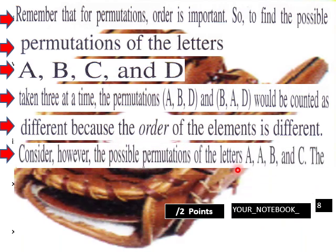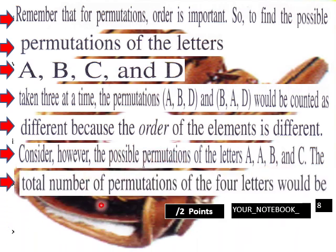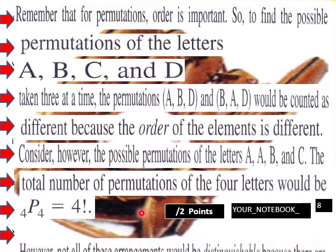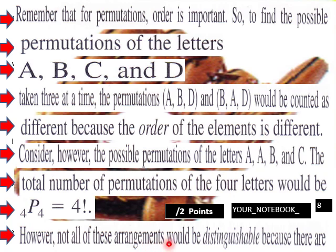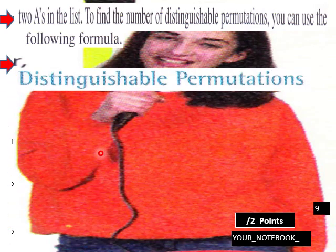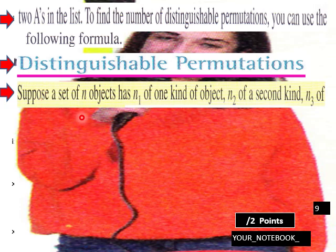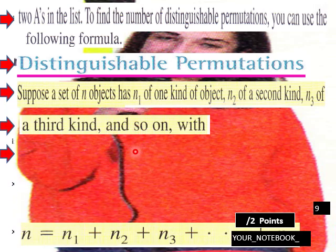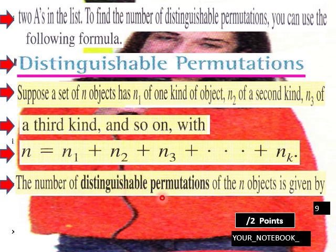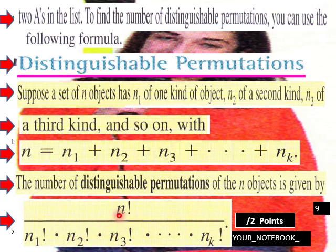Consider, however, the possible permutations of the letters A, A, B, and C. The total number of permutations of the four letters would be 4P4, which comes out to 4 factorial. However, not all of these arrangements would be distinguishable because there are two A's in the list. To find the number of distinguishable permutations, you can use the following formula. Distinguishable permutations: suppose a set of n objects has n1 of one kind, n2 of a second kind, n3 of a third kind, and so on, where n equals n1 plus n2 plus n3 up through nk. The number of distinguishable permutations is given by n factorial over the product of the factorials of n1, n2, n3, and so on in the denominator.